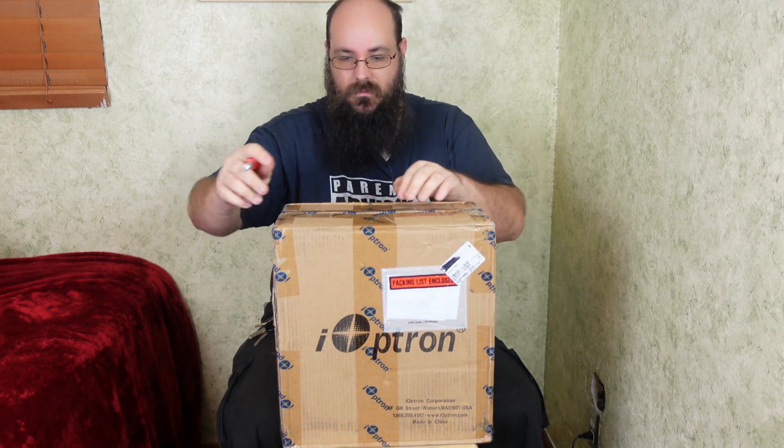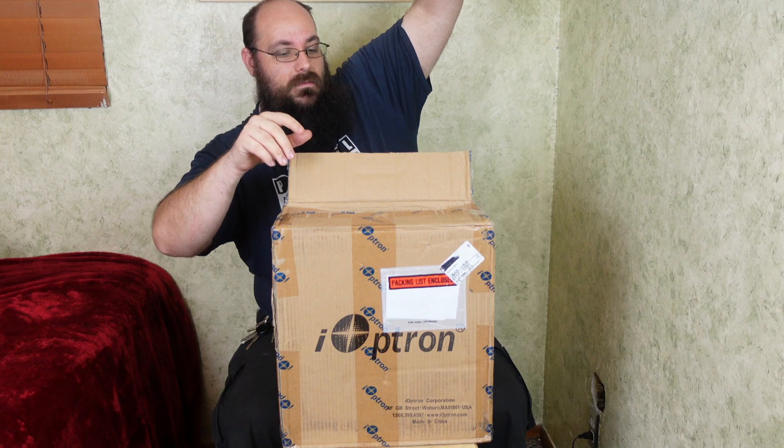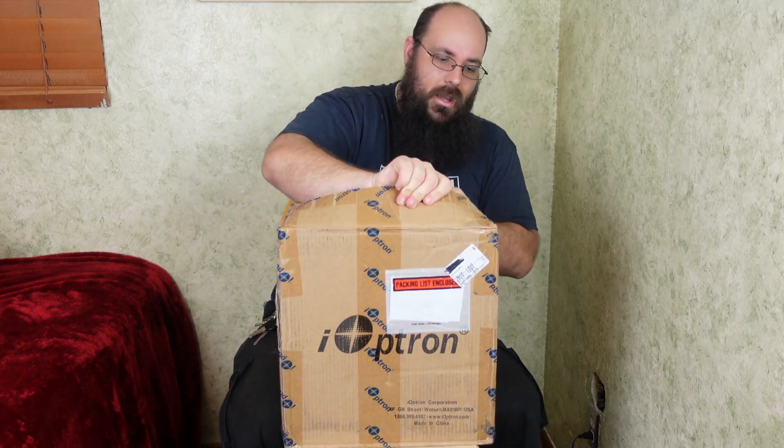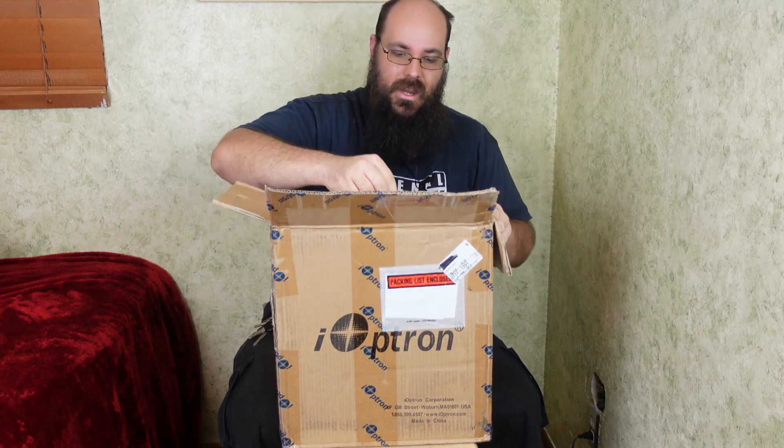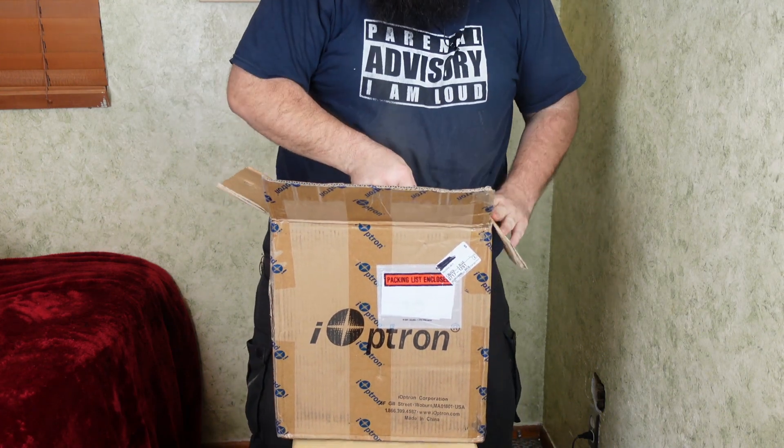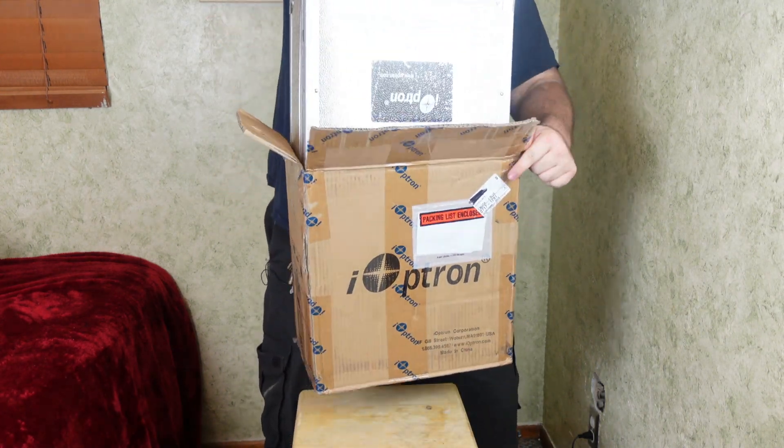Alright, let's do this unboxing. This is the GEM 28 EC telescope mount. One of the things that I really like that I've never had in any other telescope mount is that instead of sending it in a box with styrofoam, they sent it in this handy little case.